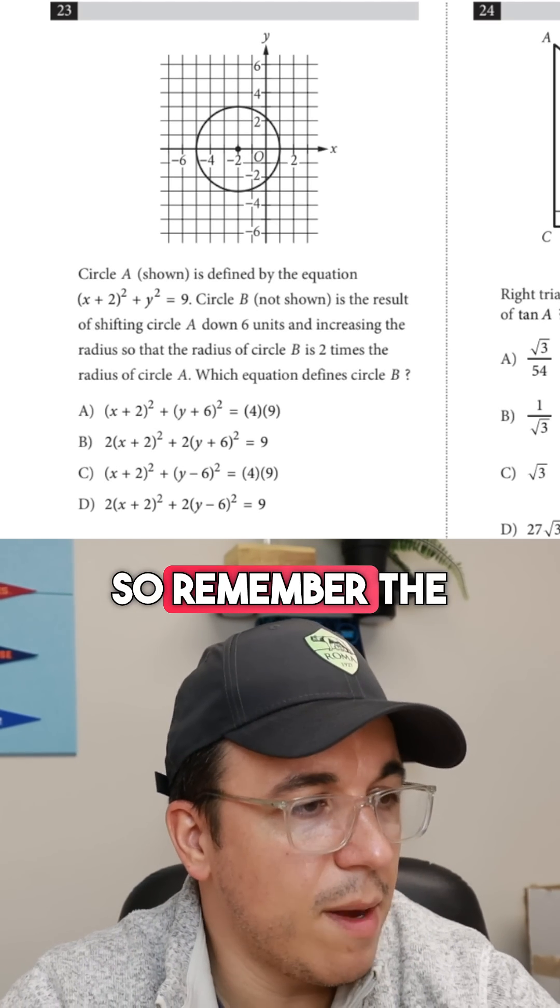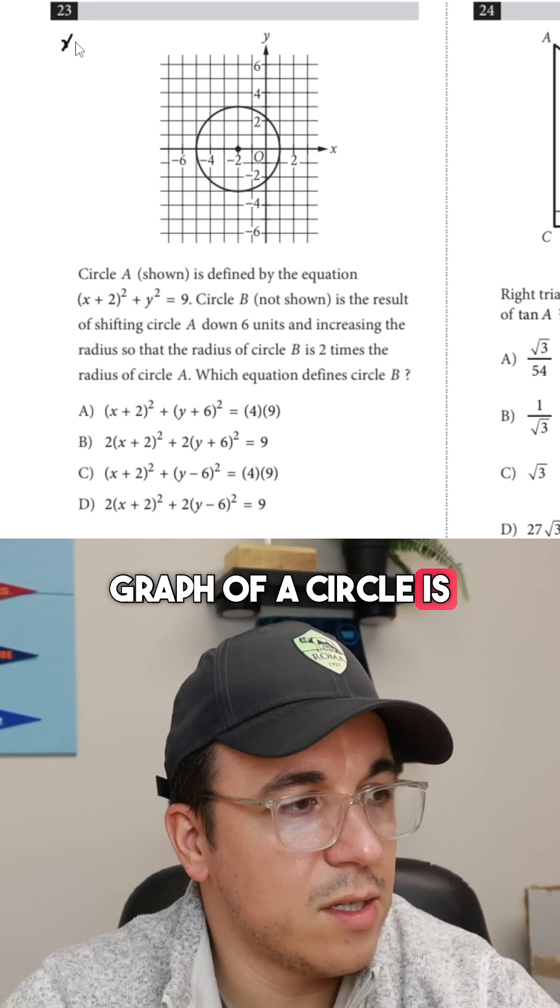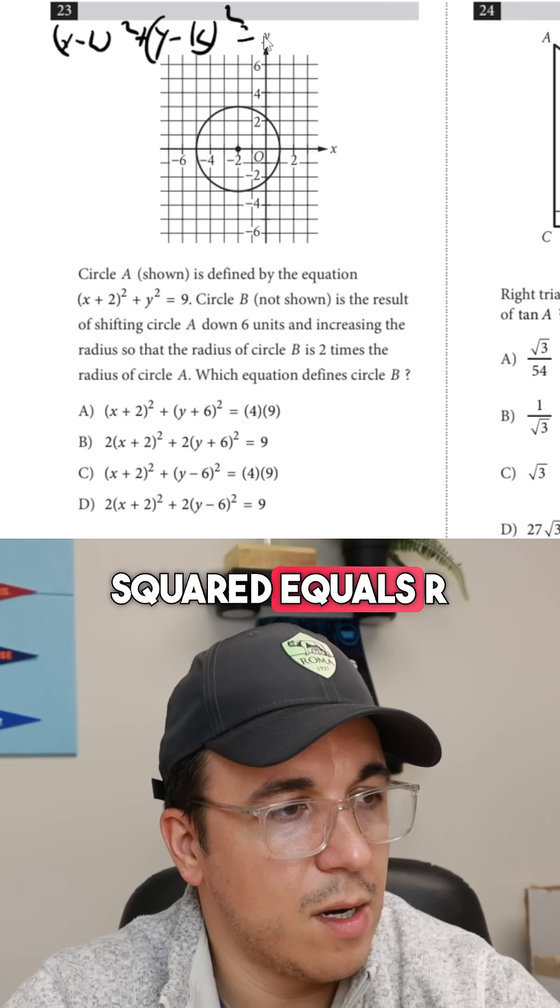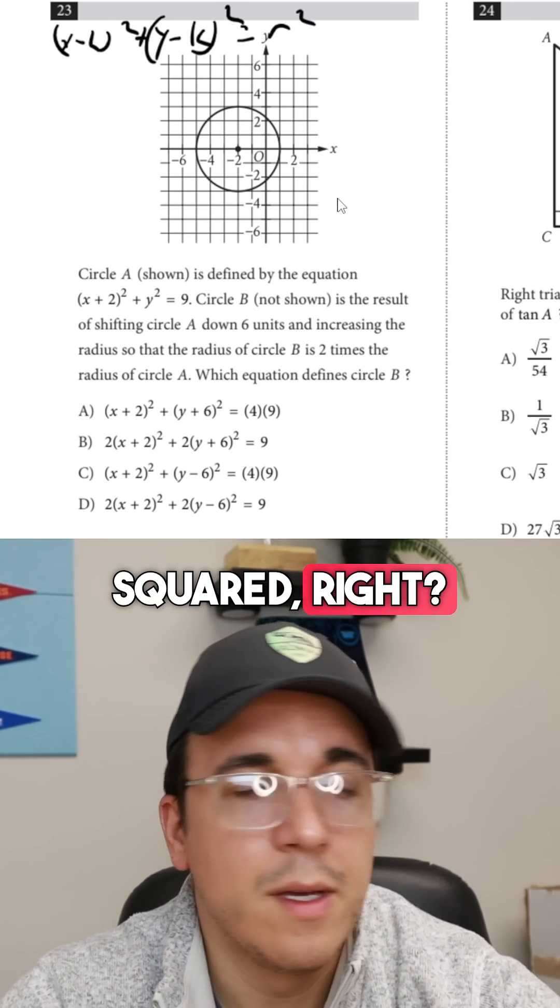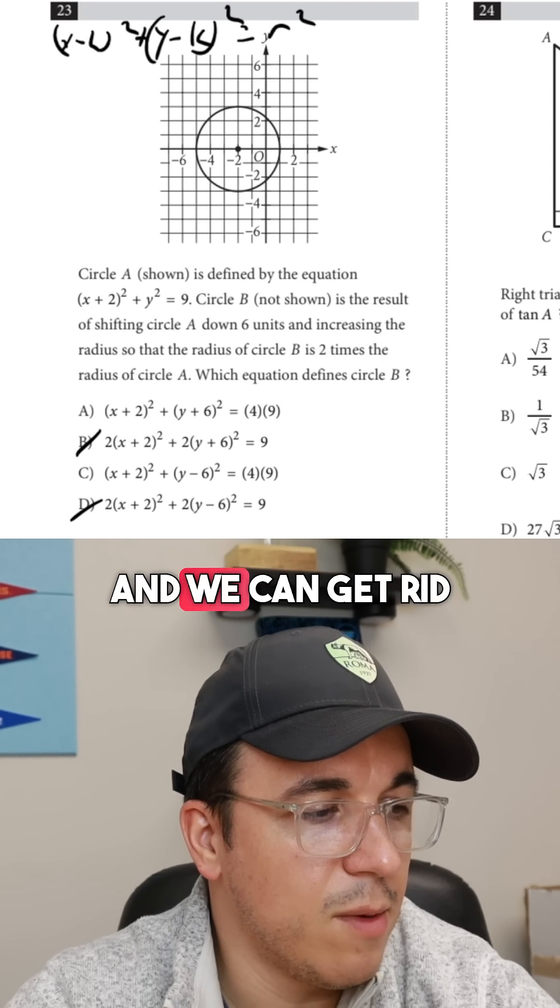So remember the formula for the graph of a circle is x minus h squared plus y minus k squared equals r squared. So our r squared is going to be 6 squared, so we're looking for 36. We can get rid of B and we can get rid of D.